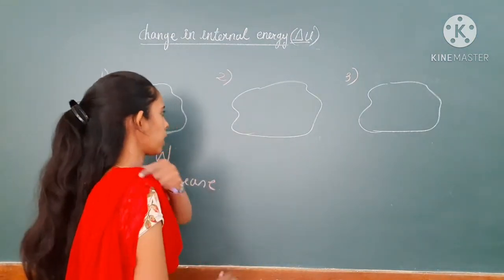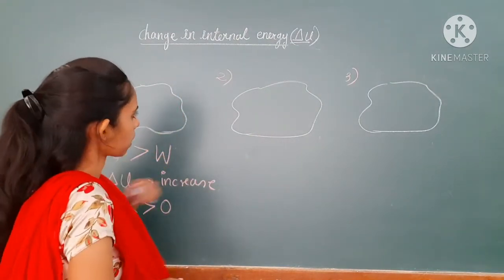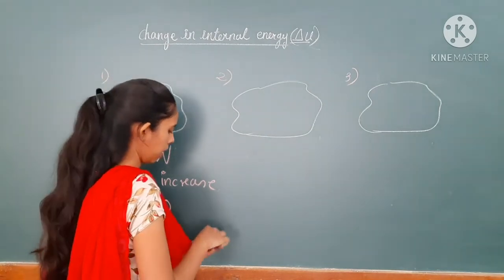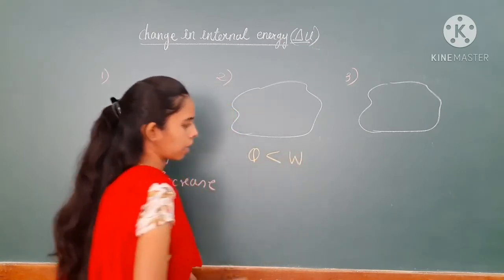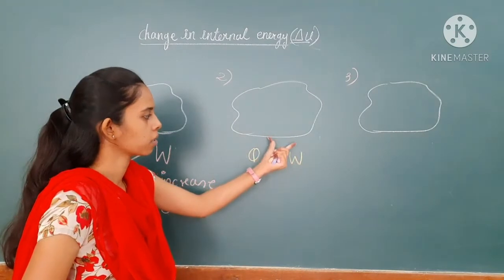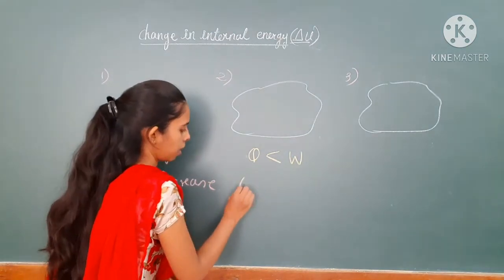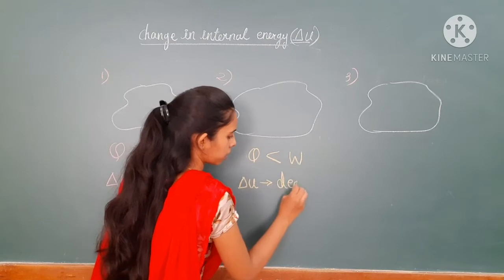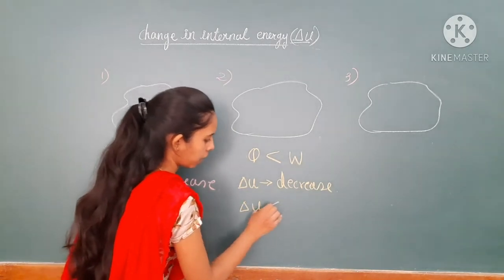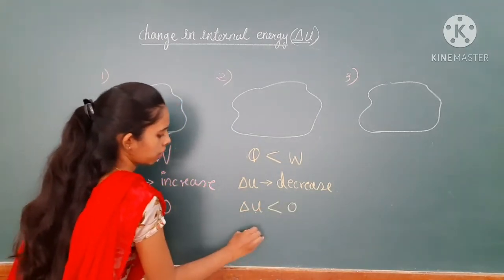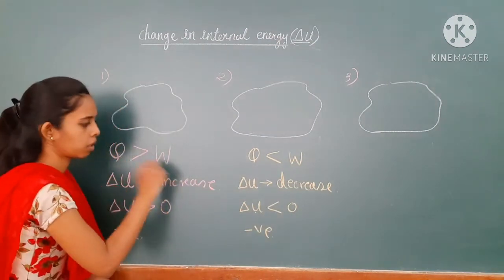In the second case, when the amount of heat added to the system is less than the work done — that is, the amount of work done by the system is more compared to the heat applied — then delta U is going to decrease. Therefore, delta U is less than zero, so it becomes negative. Here the work done is positive; over there the work done is negative.